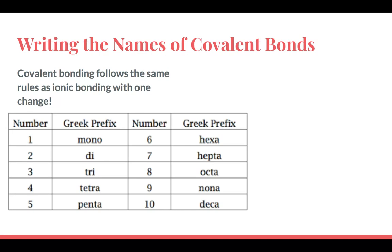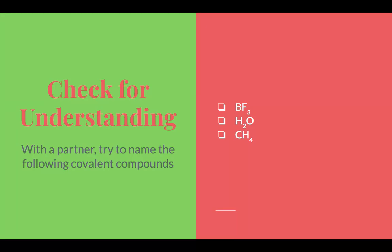It's almost the same as ionic bonding, just with a twist — those prefixes added. Go ahead and try these by hitting pause. Coming back: BF3 has one B and three F, so that's boron trifluoride. H2O has two H's and one O, so that is dihydrogen monoxide. CH4 has one C and four H's — that is carbon tetrahydride. You still keep the IDE ending for the second name.